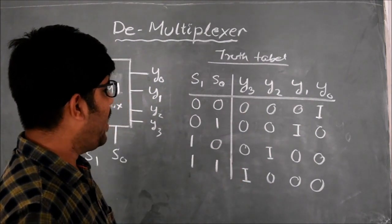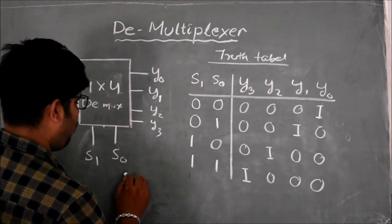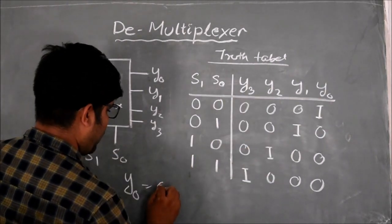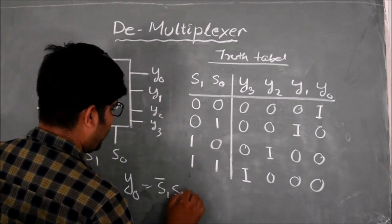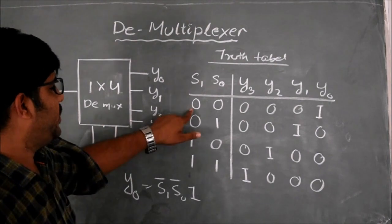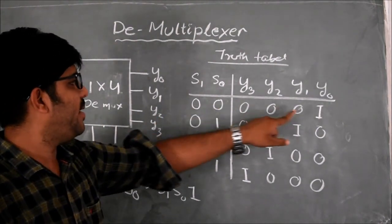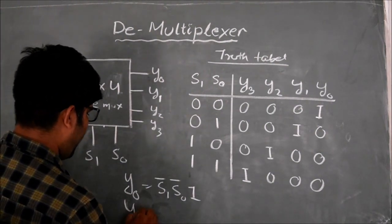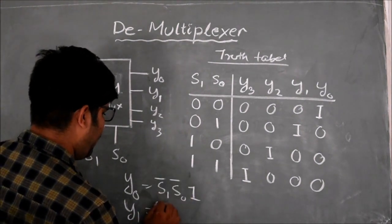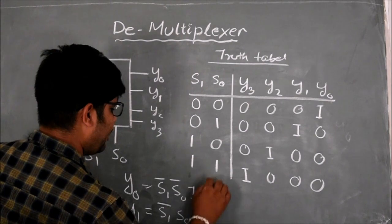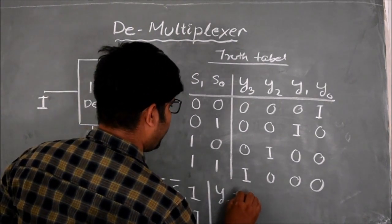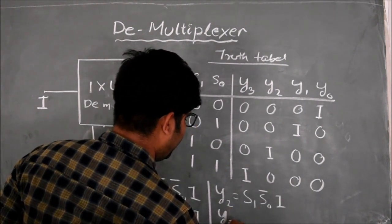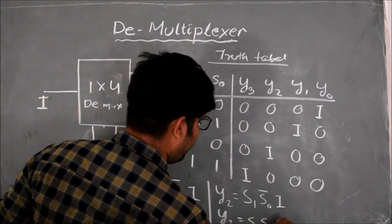From the truth table I can write the output expressions: Y0 is equal to S1-complement, S0-complement, and I. Y1 is equal to S1-complement, S0, and I. Y2 is equal to S1, S0-complement, and I. Y3 is equal to S1, S0, and I. This is the basic output equation of a 1x4 D-multiplexer.